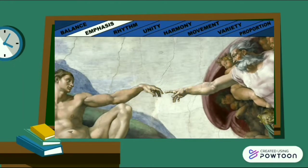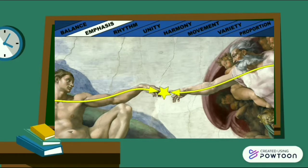In The Creation of Adam by Michelangelo, the viewer's eyes move along the outstretched arms of the figures to the point where the fingers almost touch. The uncluttered background around this area ensures that the viewer's attention is strongly focused on this point, also known as a stress point. Therefore, Michelangelo has achieved emphasis through the placement of objects in his painting.